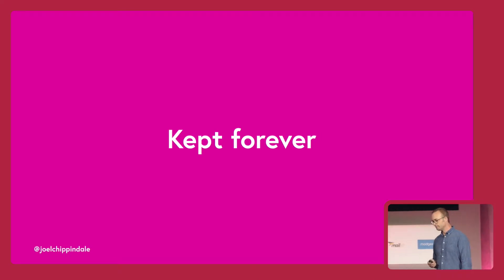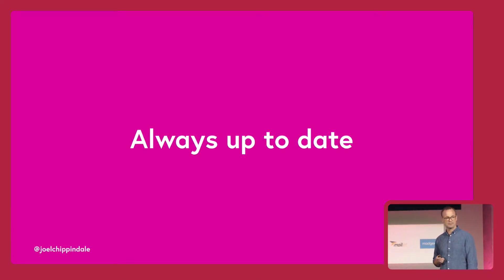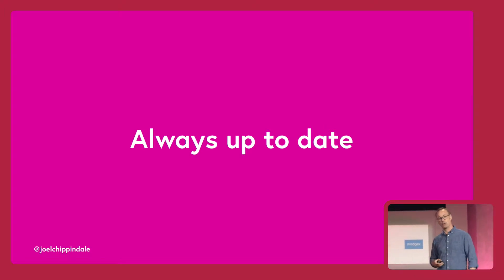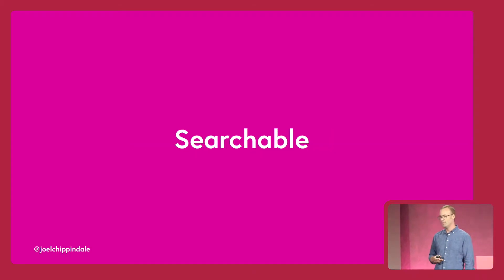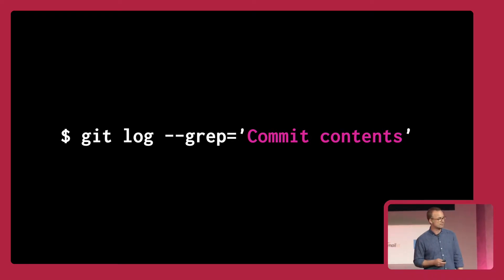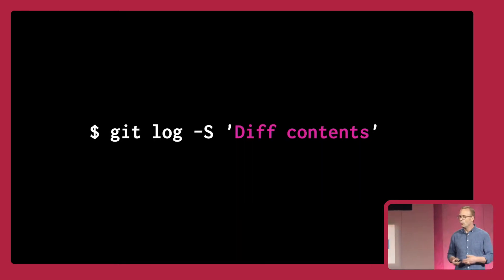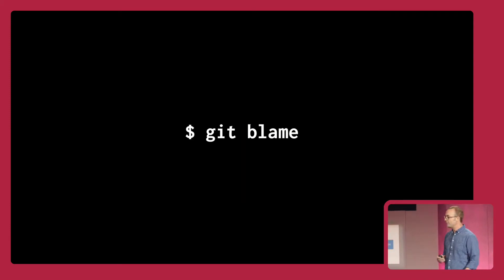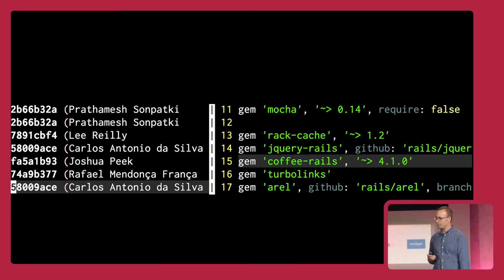Our version control system and our commit history has some very special properties that make it particularly useful. It's kept forever. It's always up to date. And this is almost certainly not true of most of the documentation that you have, perhaps on a wiki or even in code comments. And it may come as a surprise to some of you — it's searchable. Git doesn't make this obvious, so here are some commands that are useful. You can search all the contents of all your commit messages, search all the contents of the code changes in your commits, and find out where each line of code was last changed.